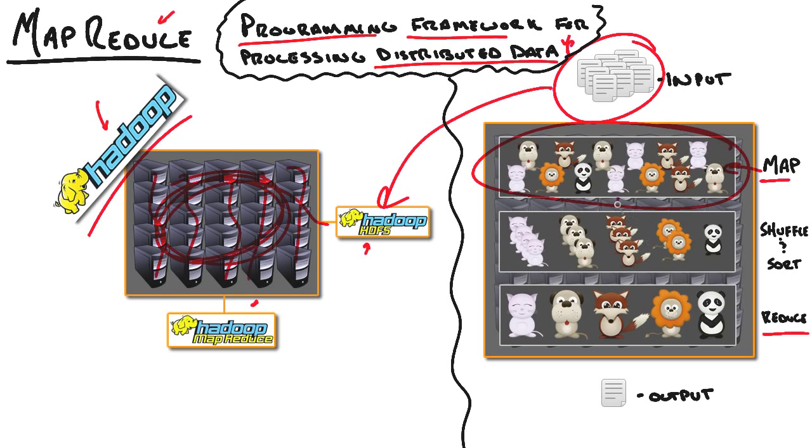The shuffle and sort phase happens in the background. It basically just lines up all the data that makes it easy for the reducers to aggregate that information.